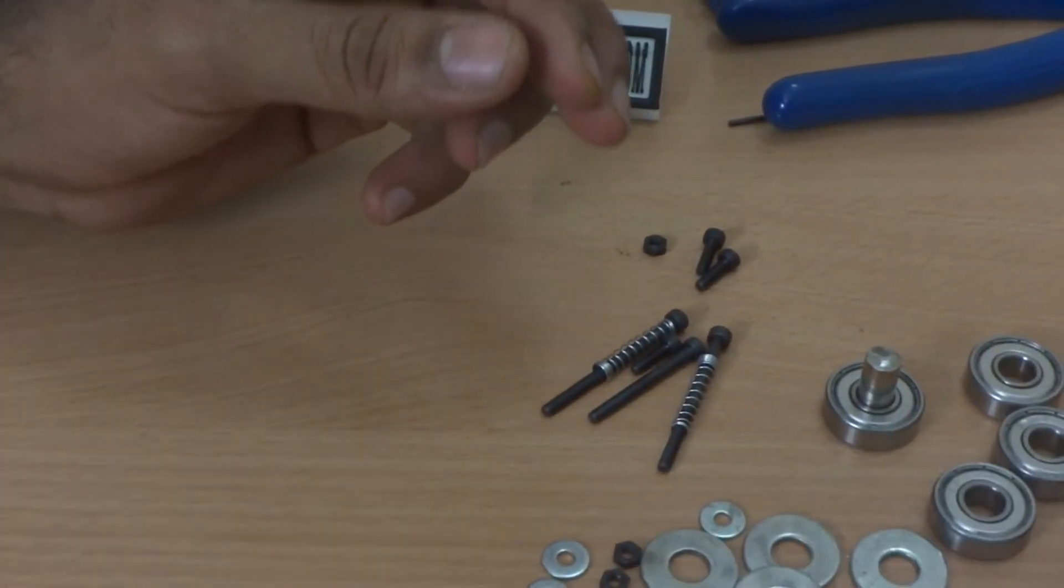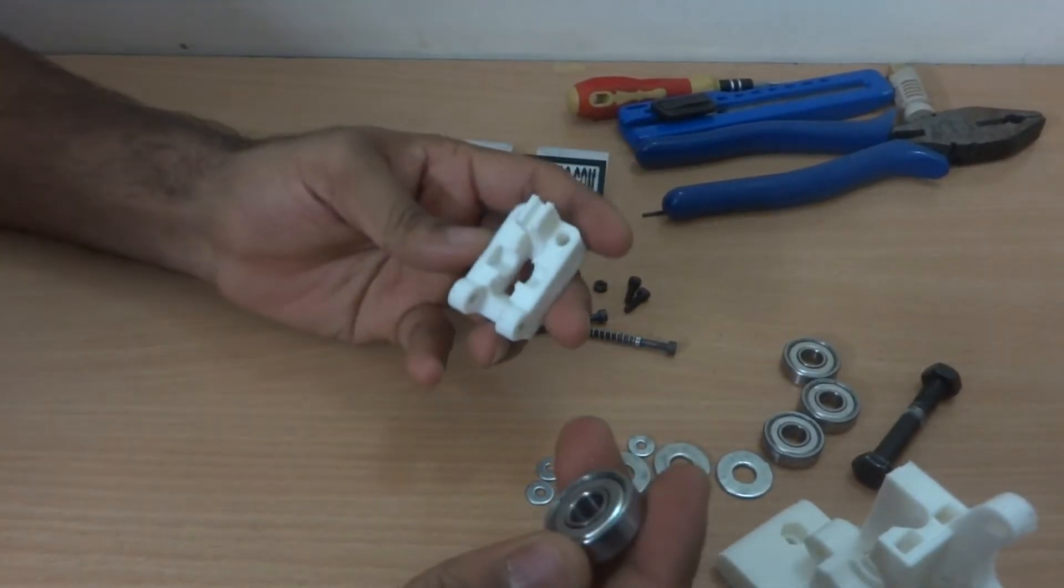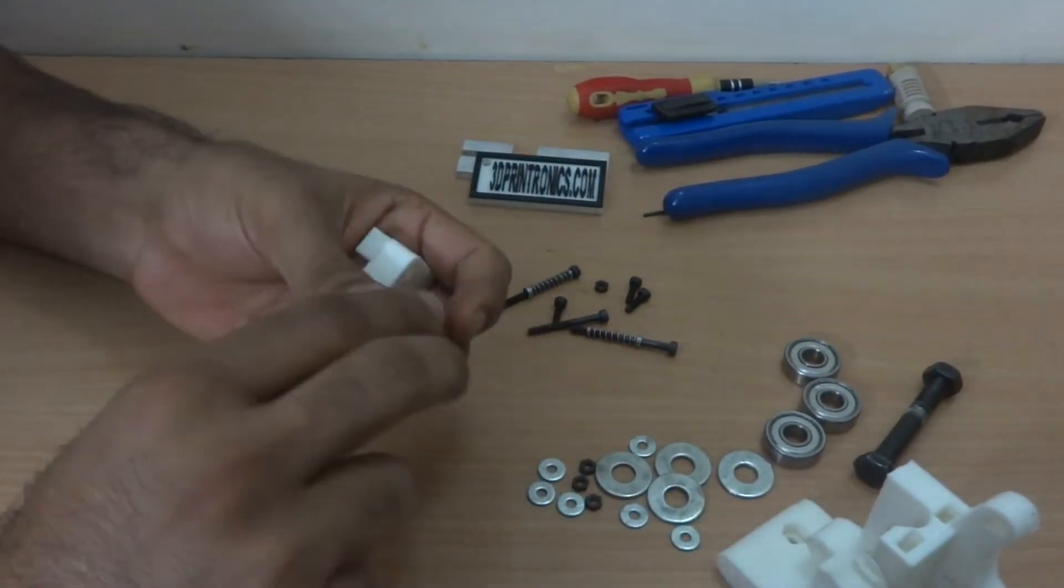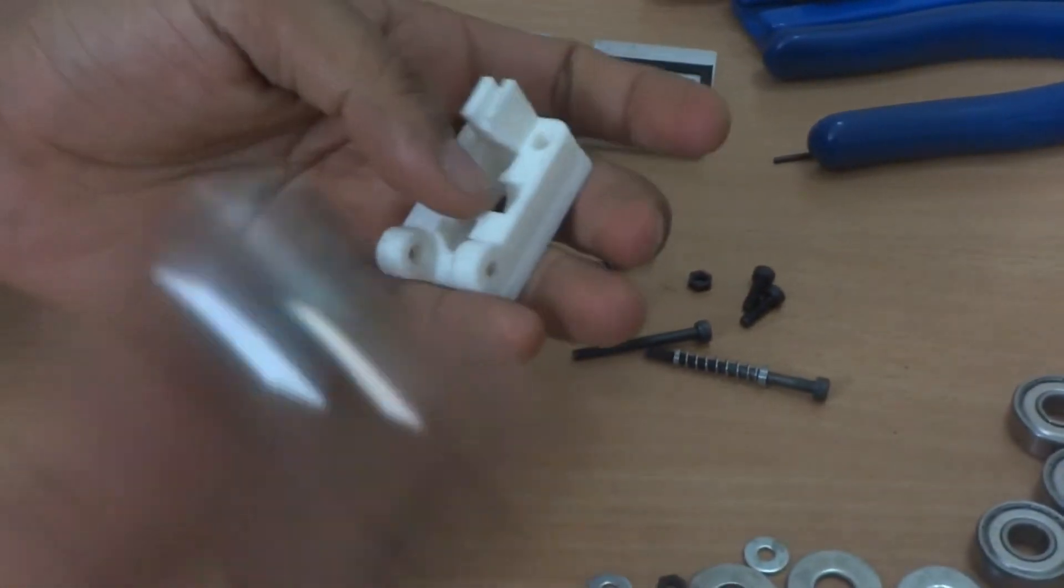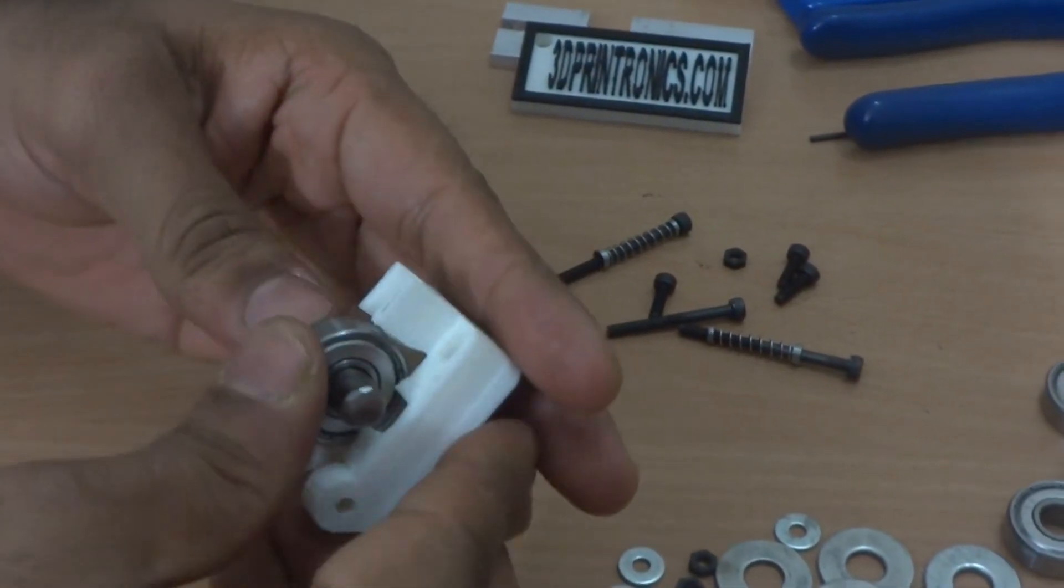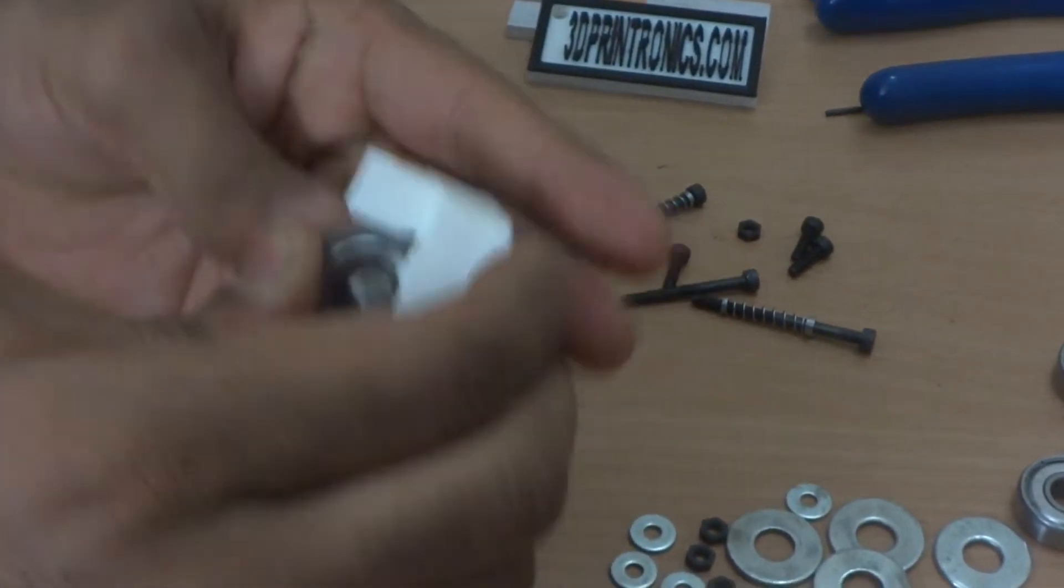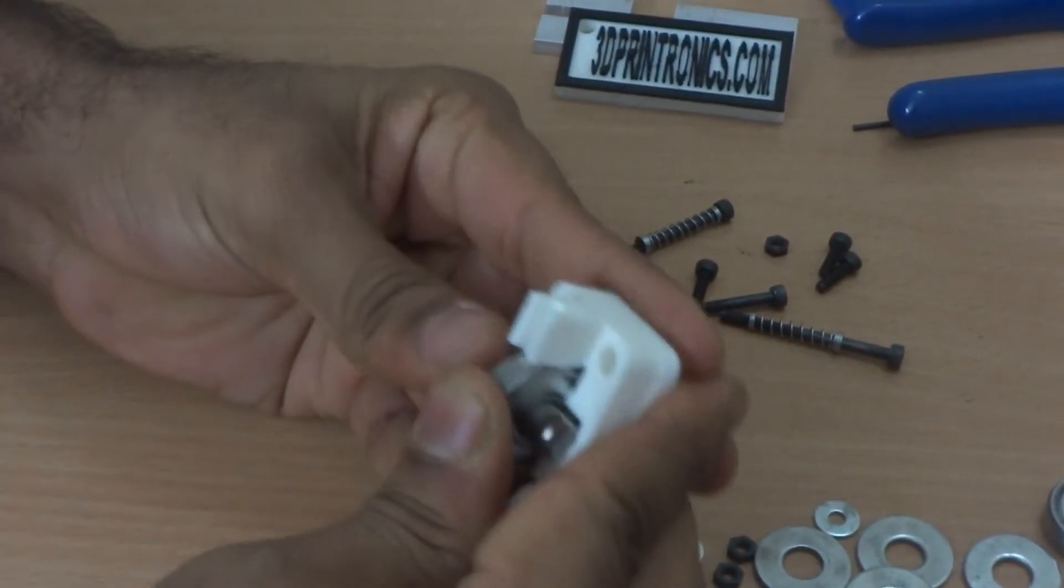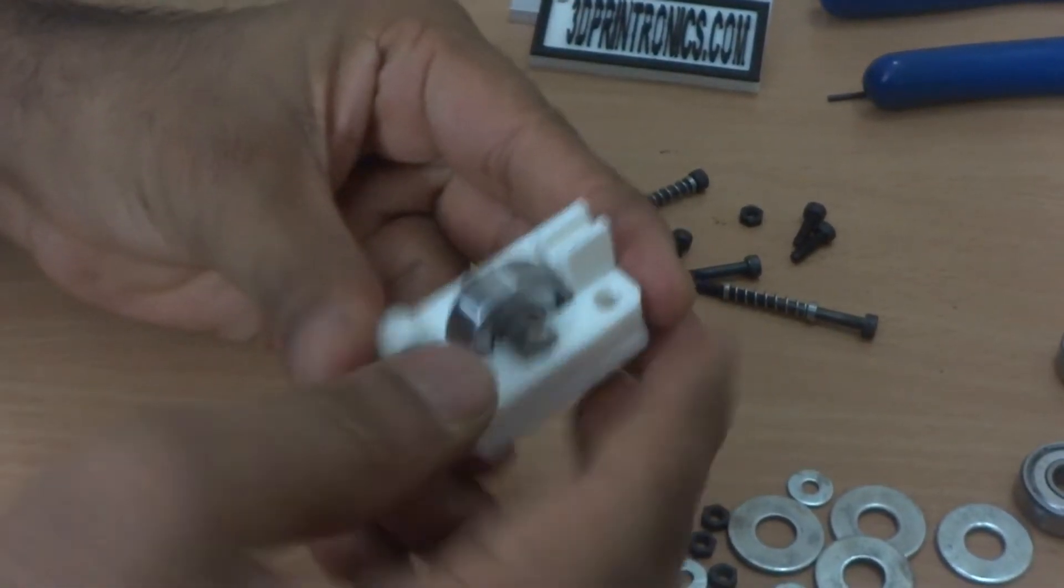So for assembly let's start with the idler. First we take the idler and we take a 608 ZS skate bearing. Take the 19mm smooth rod and just assemble it like this and press it into the idler. Might have to apply some force here. Yeah ideally it should go with some force.